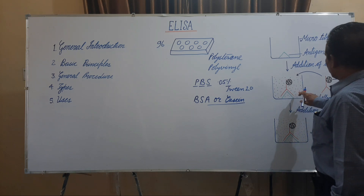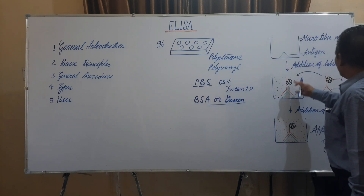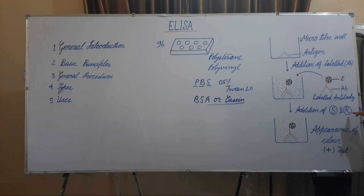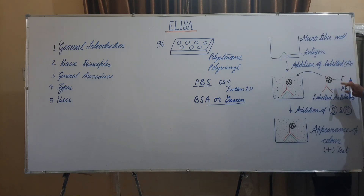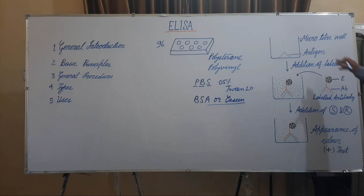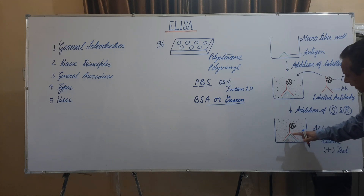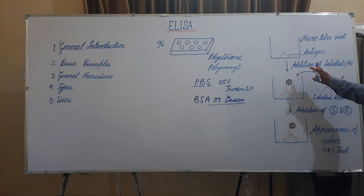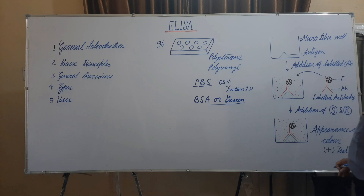The labelled antibody reacts with the antigen present on the surface of the well. Then we wash the well again with PBS to remove any unbound or unreacted labelled antibody. Then we add the substrate of the enzyme along with appropriate reagent. During the chemical reaction, in the presence of the enzyme and substrate, the reagent is oxidized to produce a specific colour in the medium. The appearance of colour denotes a positive test. As in this procedure the antibody directly reacts with the antigen and only the primary antibody is used — no secondary antibody is used — this is the process of direct ELISA.